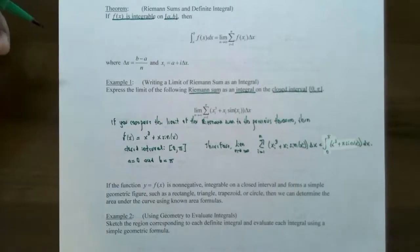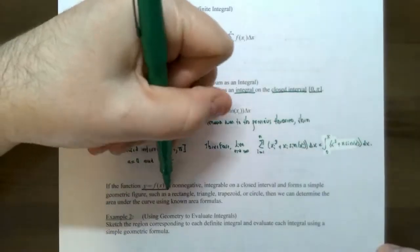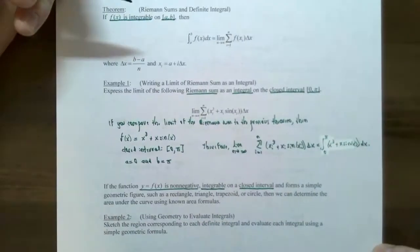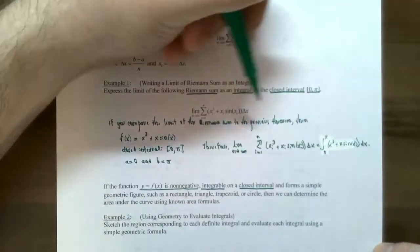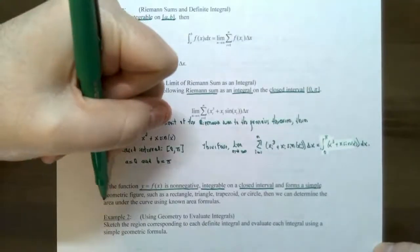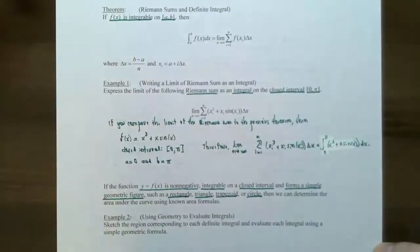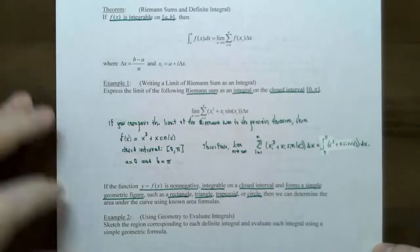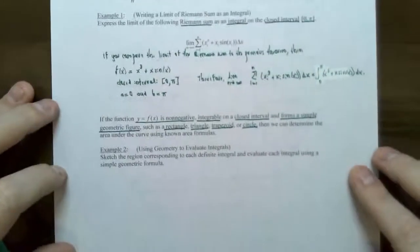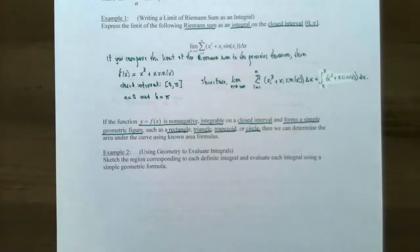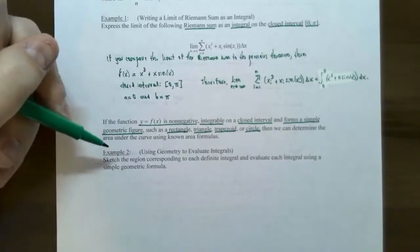A couple of things before example two: if the function is non-negative and integrable on a closed interval, sometimes the graph forms a simple geometric figure — rectangles, triangles, trapezoids, or semicircles — and we can use known geometric formulas to find the area. In example two we'll sketch the region corresponding to each definite integral and evaluate using a simple geometric formula.